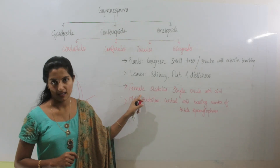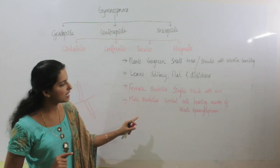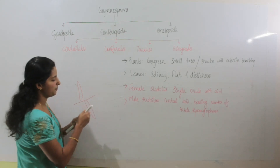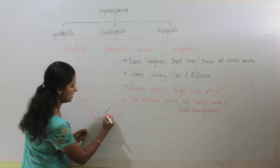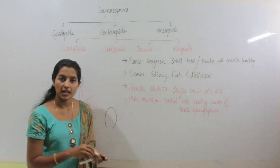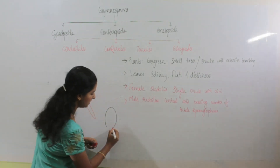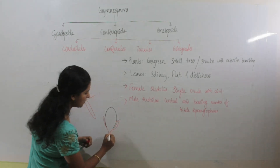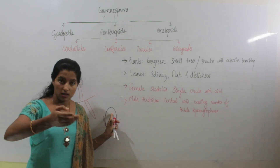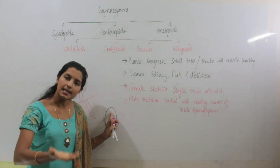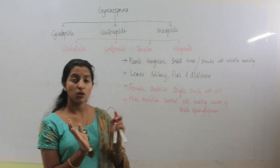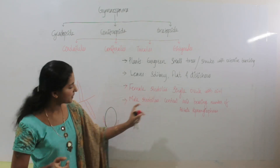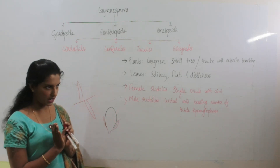Then comes the female strobilus. The female strobilus is represented by a single ovule, but it is covered with an aril. After fertilization, the ovule transforms into a seed, and the aril forms an attractive color. So instead of a perfect female cone, a single ovule is present, protected within an aril.